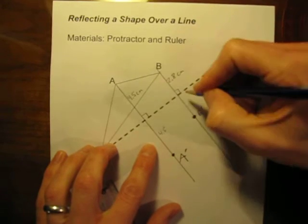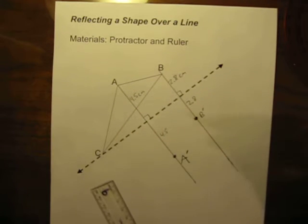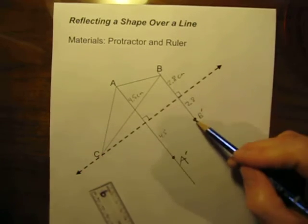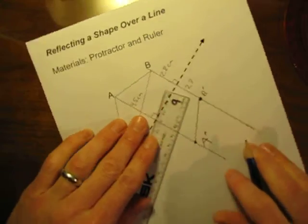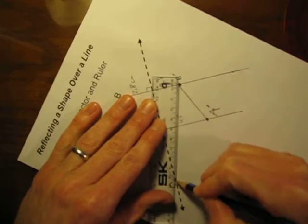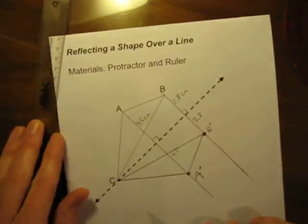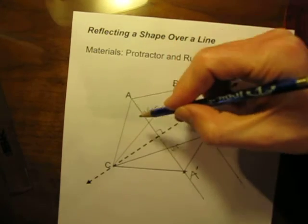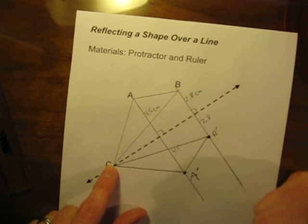So point B originally was 2.8 from the reflection line, the new point B is 2.8 from the reflection line. The final thing is, let's connect our points. Remember C is already on the reflection line, so it's not going to move, so let's just connect our points and get our new triangle. So we'll connect A prime to B prime. We'll connect B prime to C, and let's connect C back to A, and there is our reflected triangle. B reflected over to point B prime, A reflects over to A prime, C, which is on the line of reflection, does not move, and we are finished.